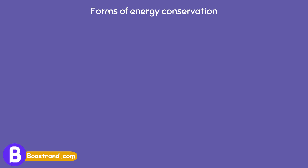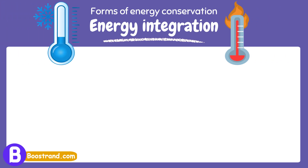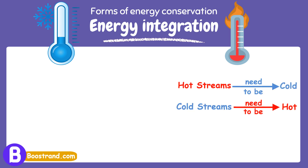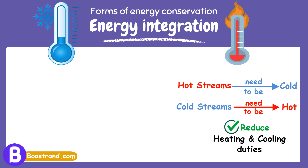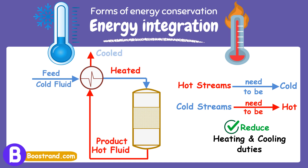The second way is energy integration. Integrating hot and cold streams is one of the most famous practices a process engineer thinks about when designing a process. Most processes have hot streams and cold streams, and we can integrate between both streams in order to reduce the heating and cooling duties. For example, if we are designing a process where the feed to a reactor or tower is required to be heated, and in most cases the product is required to be cooled, we can heat the feed with the effluent or the product.